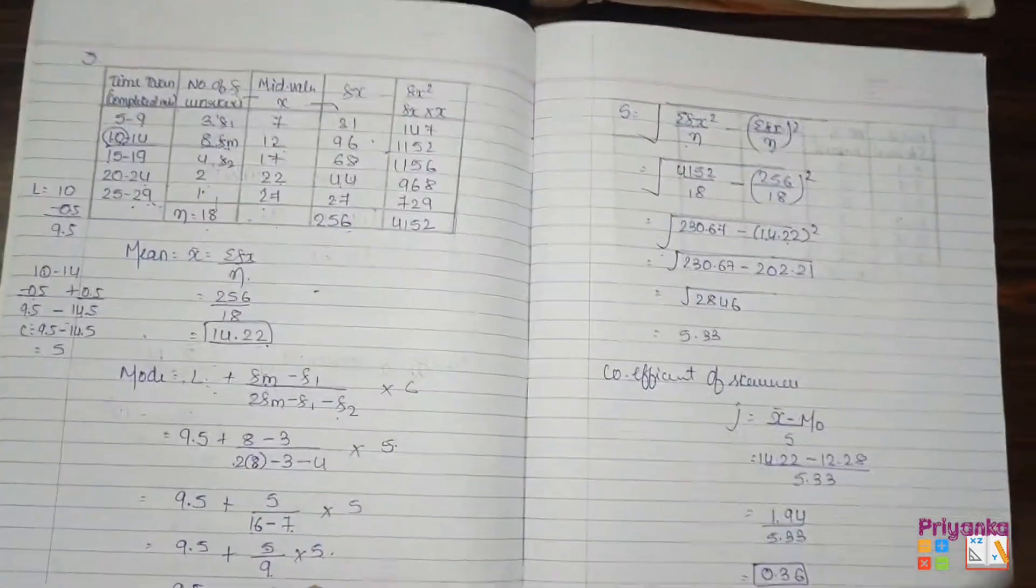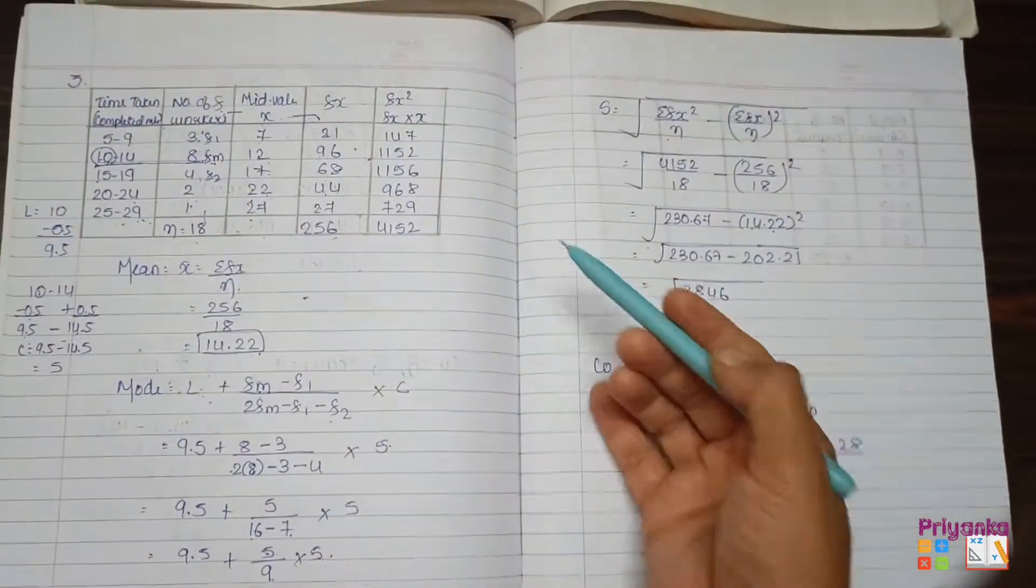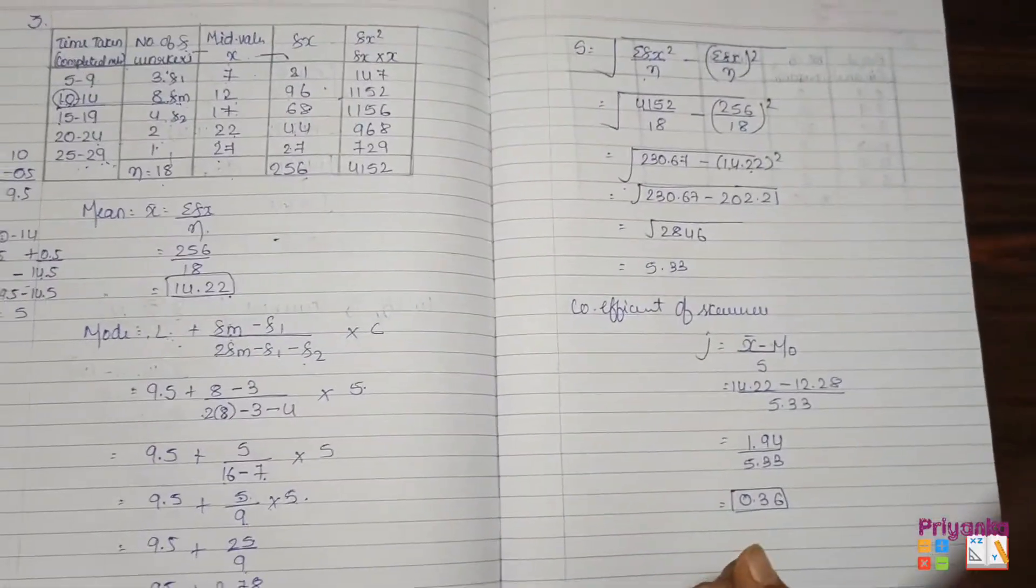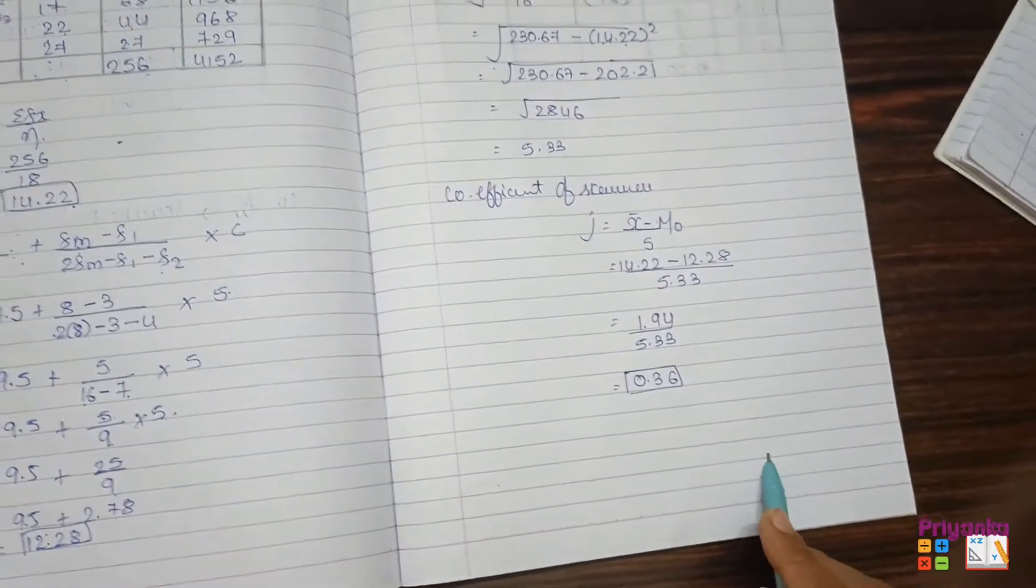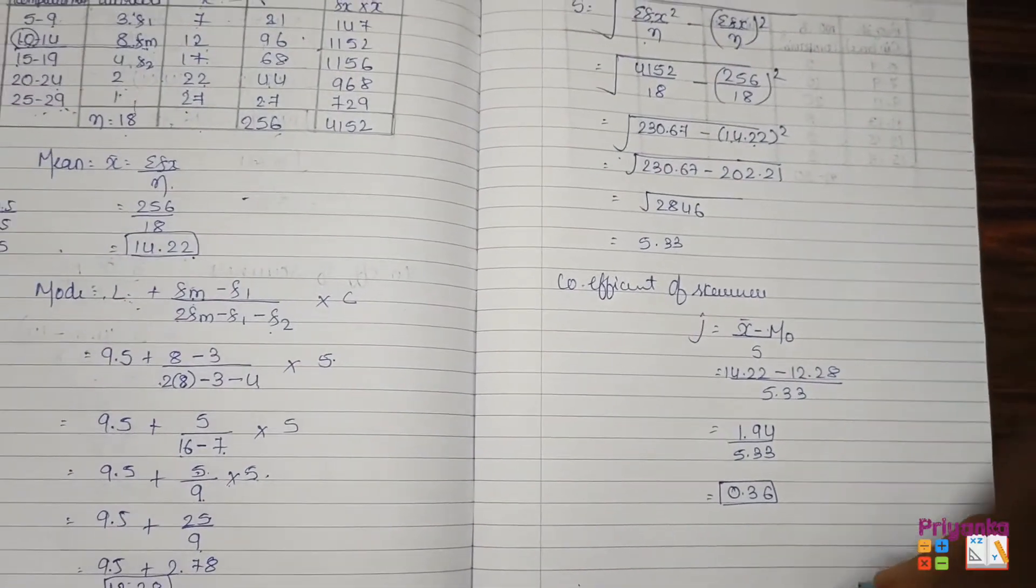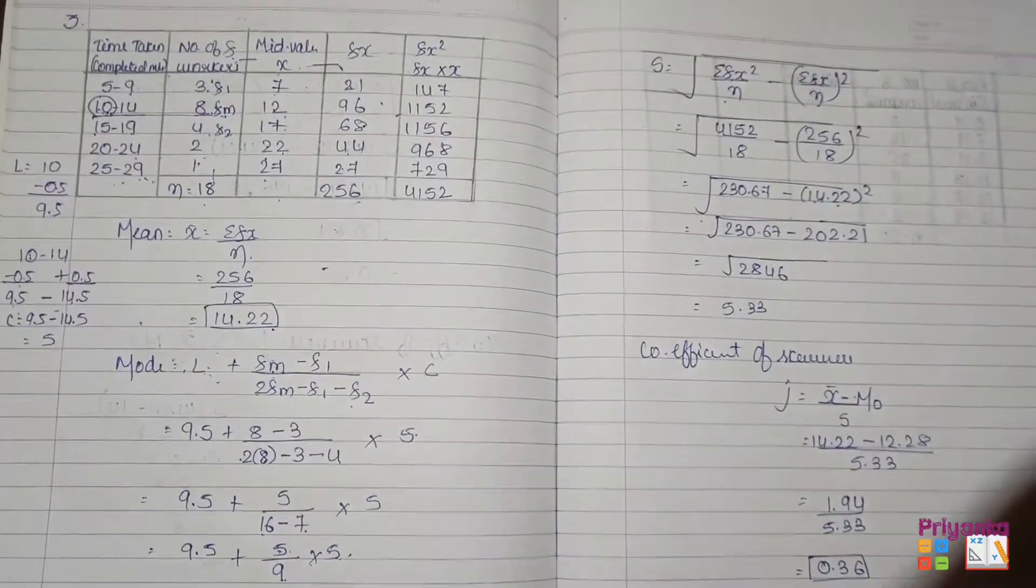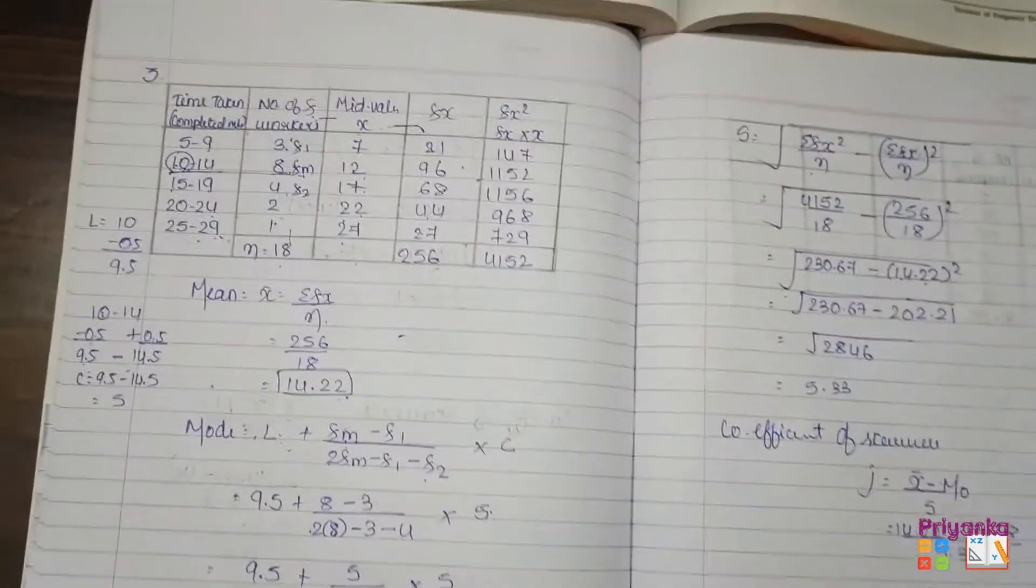We move to the next question. In the last question I forgot to explain, but for the interpretation just write down that it's positive skewness if the answer is positive, and negative skewness if it comes in minus. Moving to the next question.